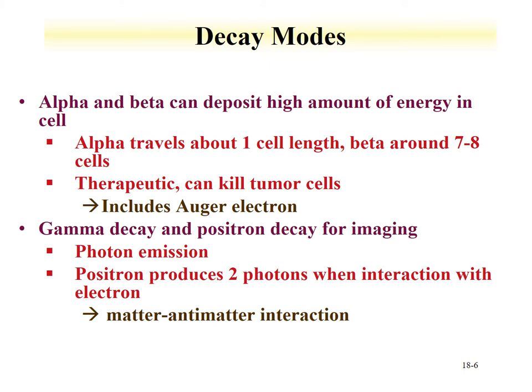For medical isotopes, the decay modes are important for their applications. Alpha and beta decay can deposit high amounts of energy in a cell. An alpha will travel about one cell length, while beta particles travel almost 10 cell lengths — both can kill tumor cells. The linear energy transfer is much higher for an alpha particle; all that energy is deposited in one cell, whereas for a beta particle, only about one-tenth of the energy is deposited in any given cell. Auger electrons can also have therapeutic capabilities.